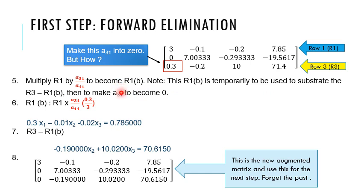Multiply R1 by A31 divided by A11 to become a new equation, R1B. Then we subtract R3 equation with R1B equation. We can make element A31 become 0. We will use the new augmented matrix for the next step.